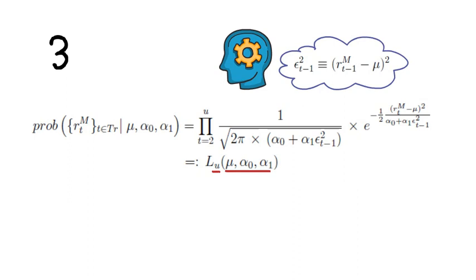So notice, I've started the product in T equals 2. I've done so as ε₀ is not observed. I could start in T equals 1, but then I would have to treat ε₀ as an unknown parameter that I need to determine via the estimation.